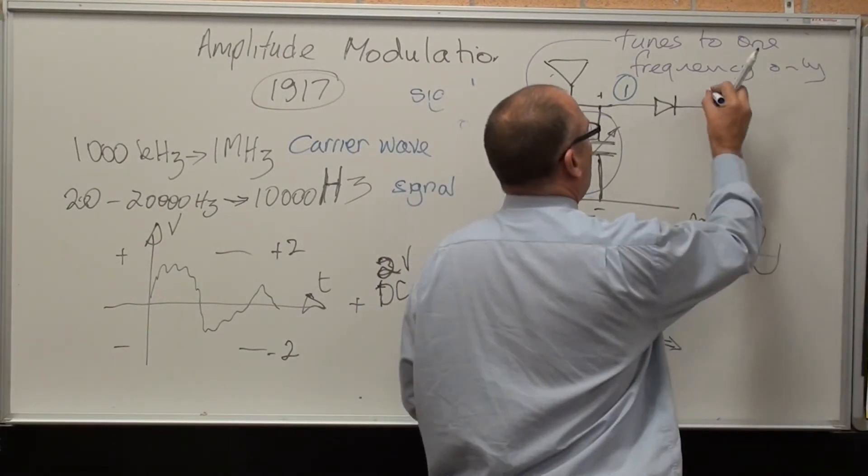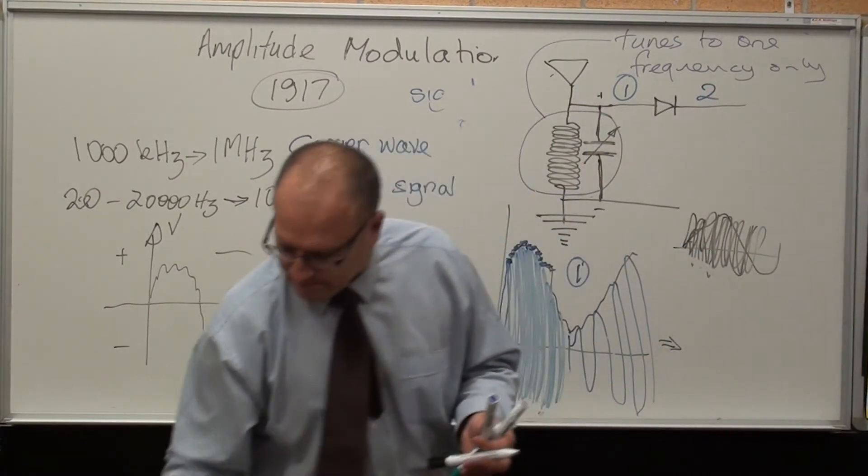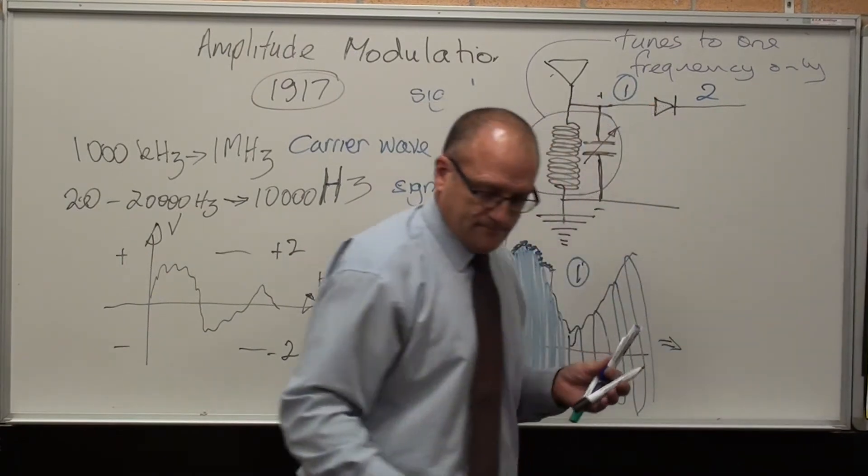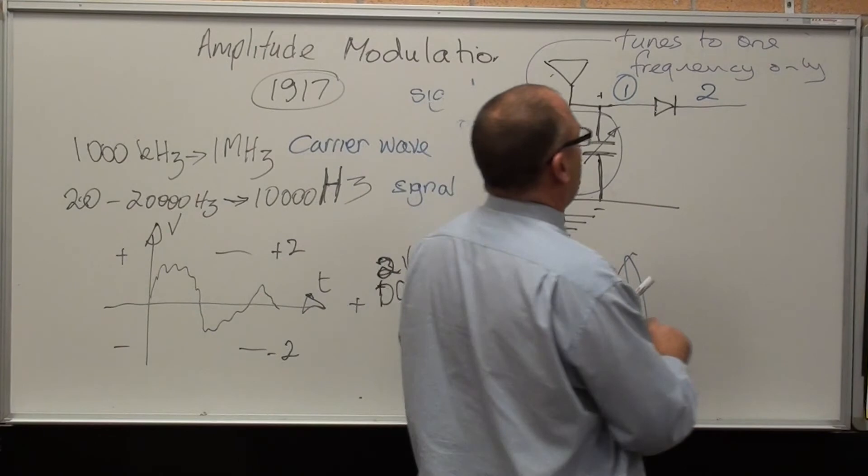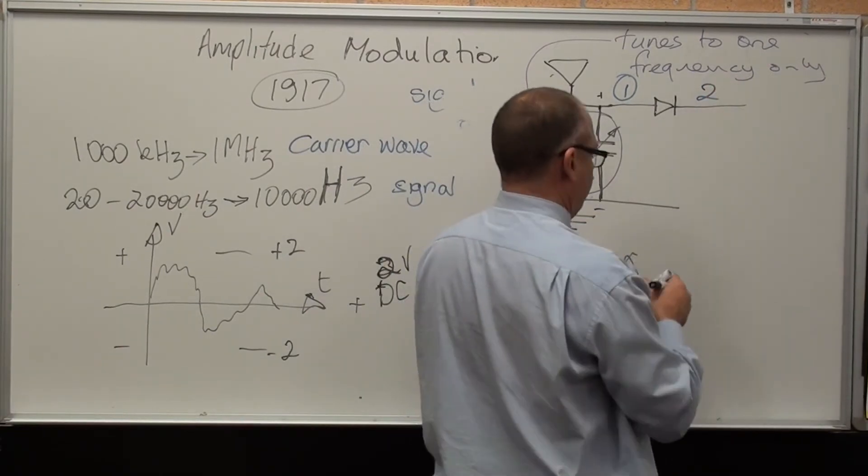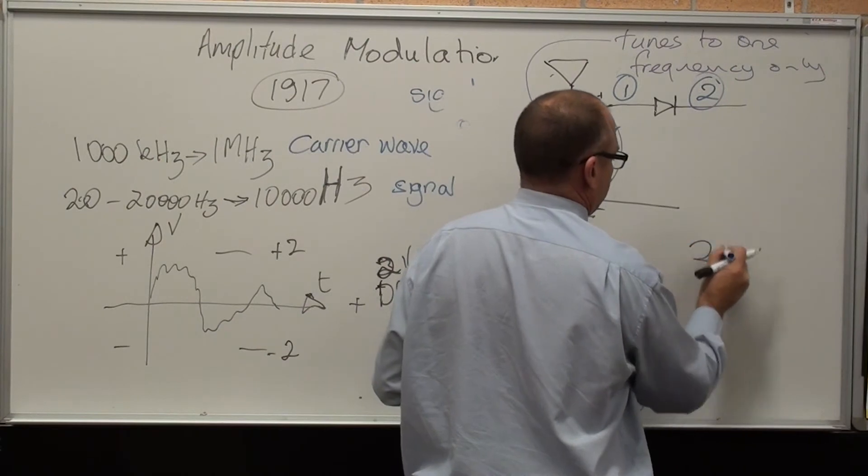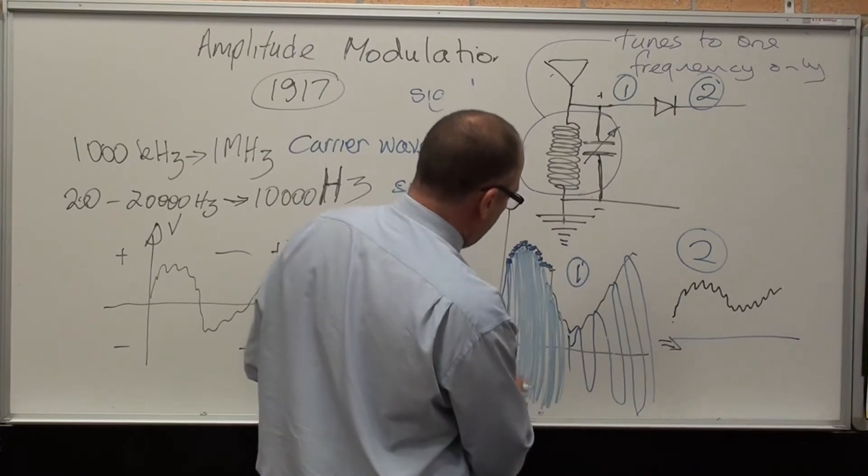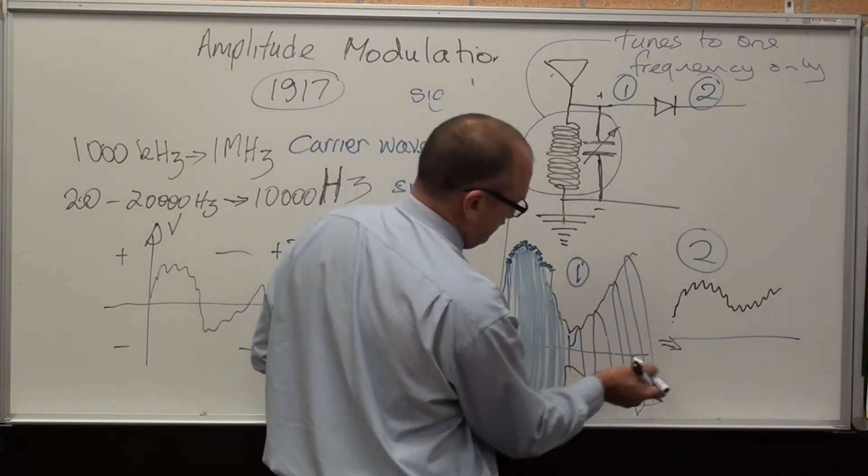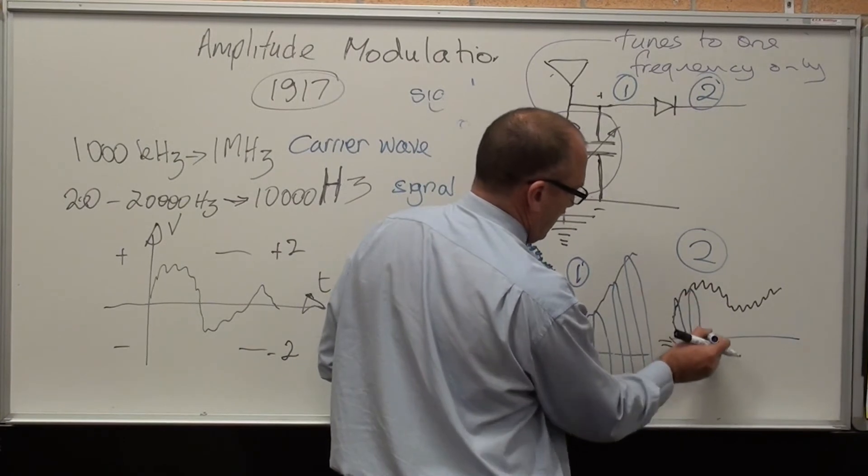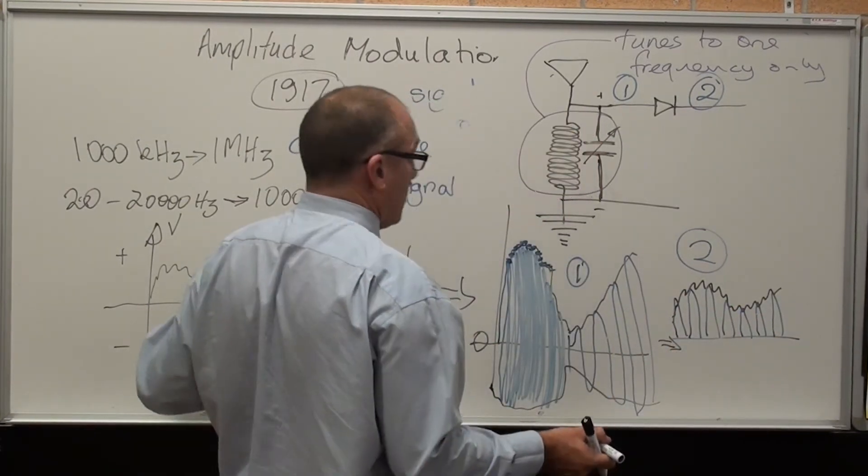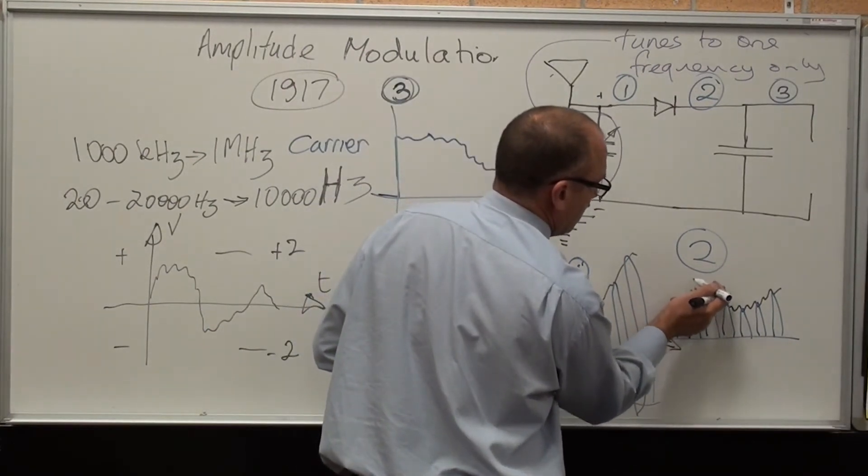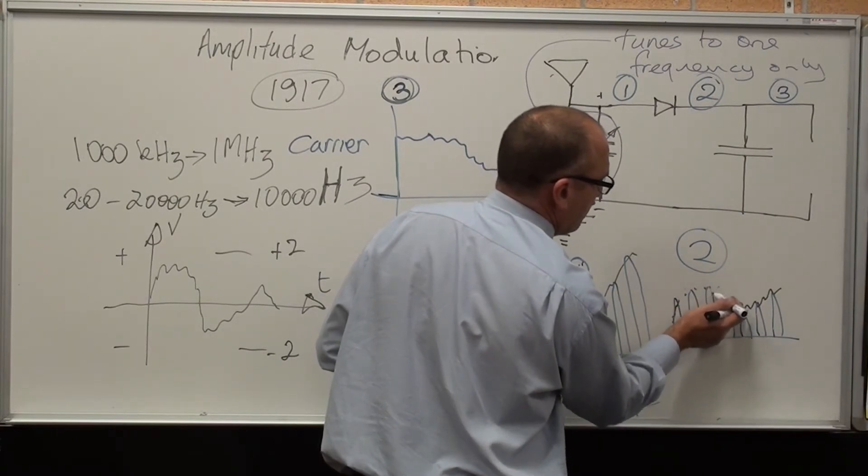At point two, we are seeing this. Only the positive half. None of this negative part that was down here. I'm only seeing the half wave. Starting to look like the sound wave again now, isn't it? Of course. You don't see that top black bit that I've drawn in there. That was what's called the envelope of the waveform.